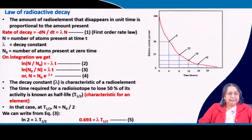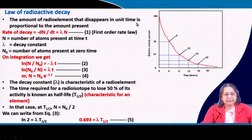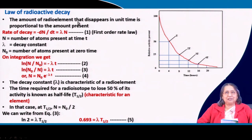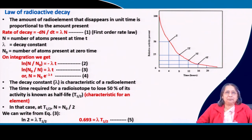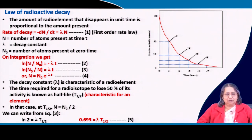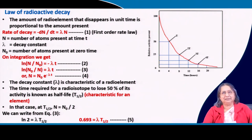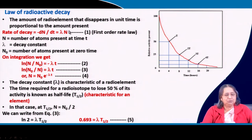Now, the law of radioactive decay. The amount of a radio element that disappears in unit time is proportional to the amount present — you can see the similarity to a first-order reaction. The rate of disappearance of the radio element per unit time is proportional to the amount present, just like the first-order rate is proportional to the concentration at that time.